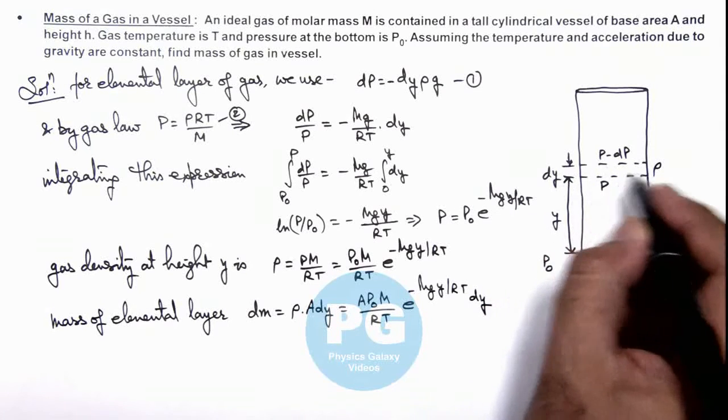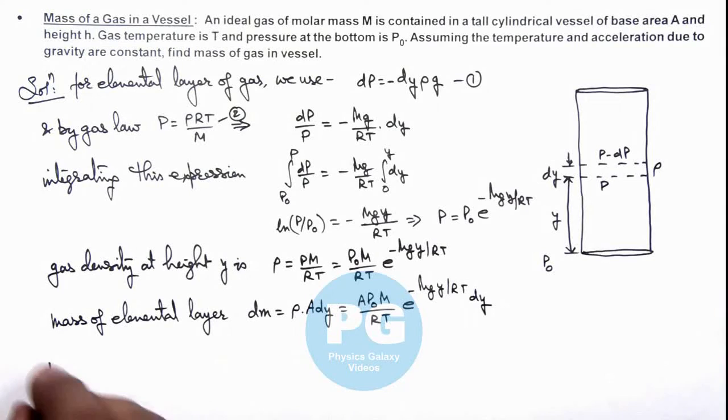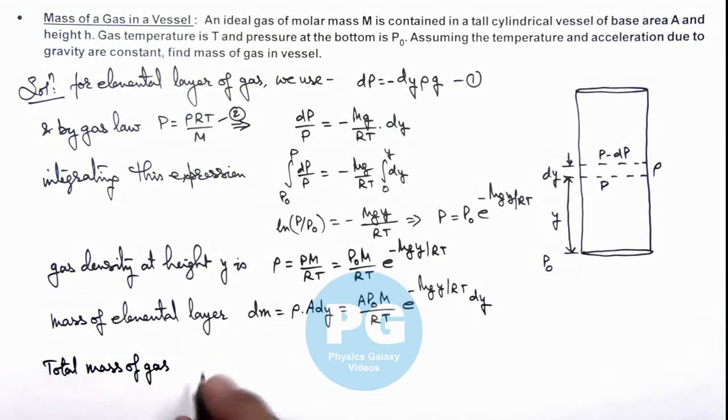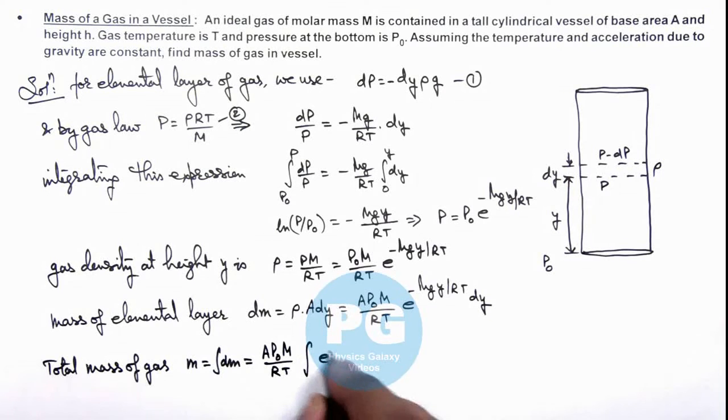If this is the mass of the gas in this elemental layer, we can find out the total mass of gas, which can be given as m - this integration of dm. This is A P₀ M/(RT), integration of e^(-Mgy/RT) dy. And we integrate it from zero to h, where h is the total height of the gas.